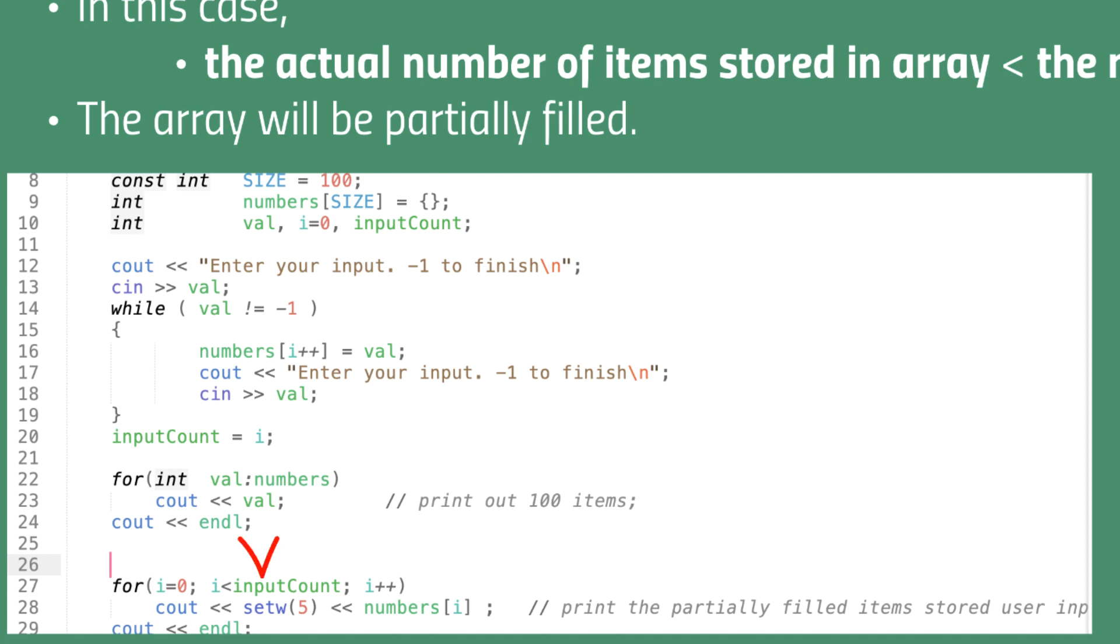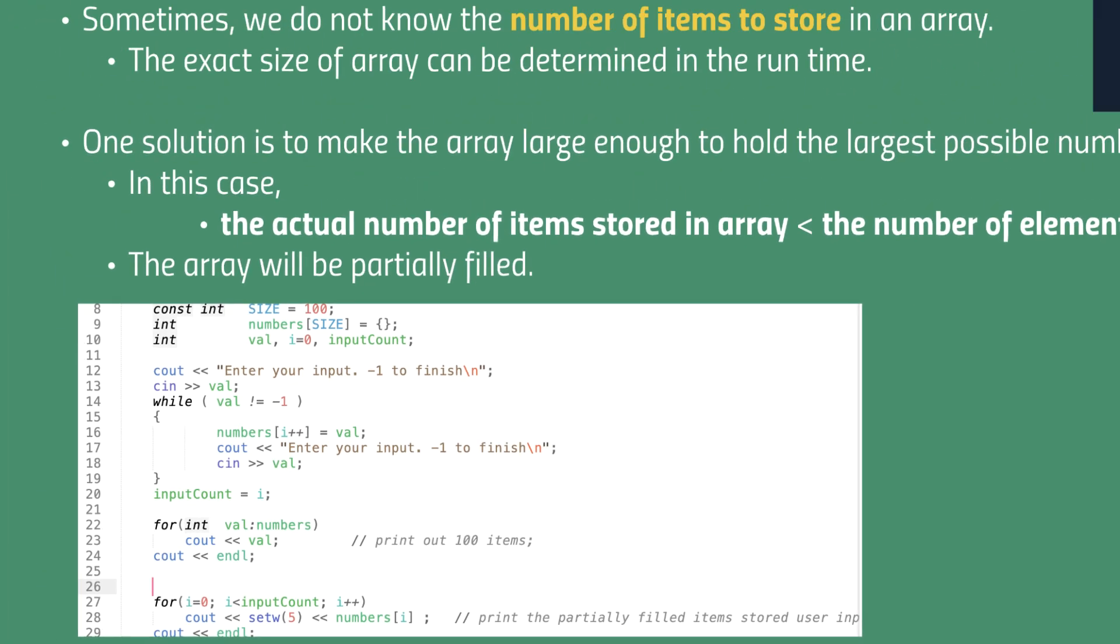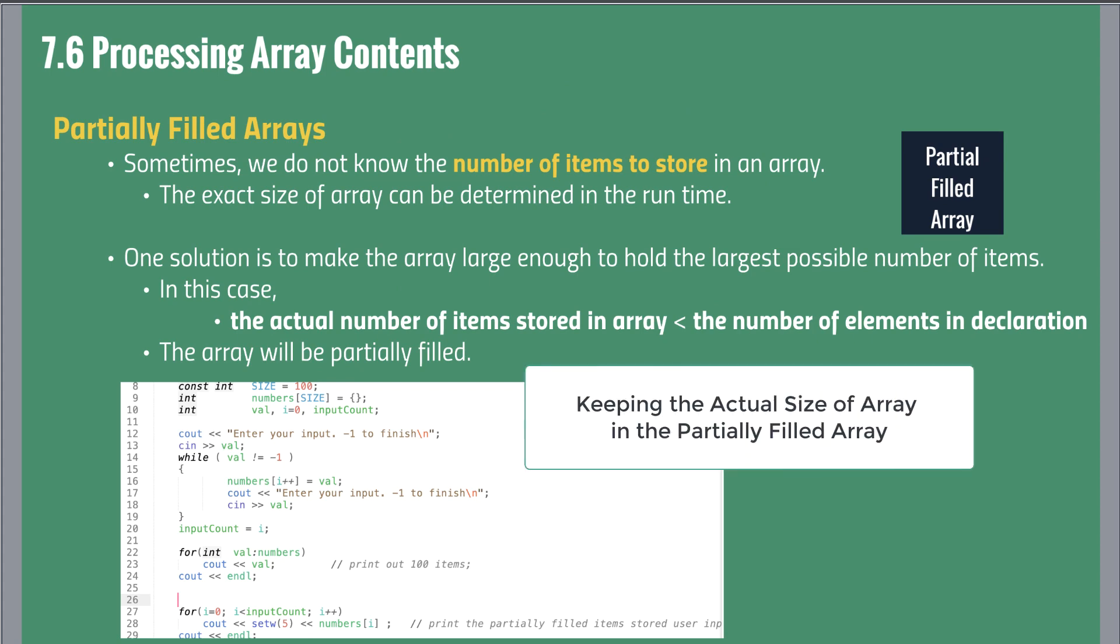Hence, we should use the exact size of array to manage the array elements. We need one particular variable to keep the actual size of array. The keeping the actual size of array is the key point of the partial filled array.